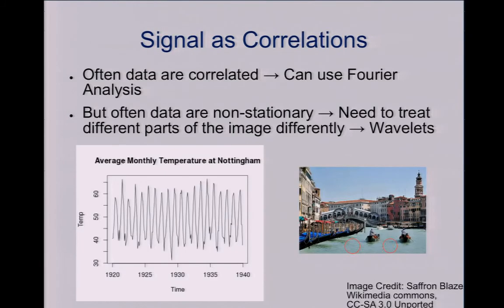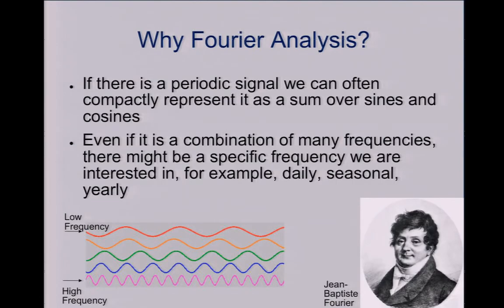If you take this picture on the right here, we see that it's highly redundant, that there's lots of information that we could compress. The picture on the left is also redundant, but it's redundant in different ways. The water is different from the bridge, so we need to treat different parts of the image differently because it changes.